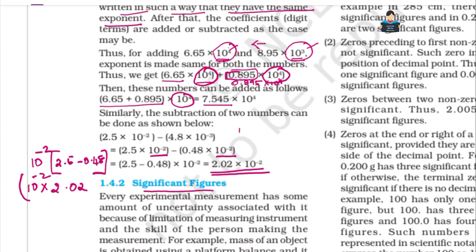The result is 2.02 × 10^(−2). So that is how we solve addition and subtraction using scientific notation.